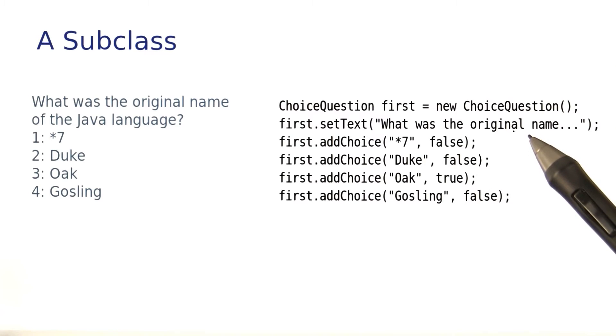When I form the choice question class, I don't want to start from scratch. I want to inherit as much as possible from the question class that's already written. Let's see how to do that.